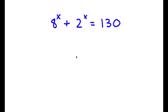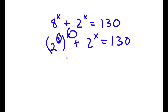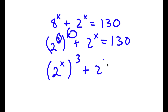In this problem, I have 8 to the power of x plus 2 to the power of x is equal to 130. To solve this, I'm going to first rewrite 8 as 2 to the power of 3. So now I have 2 to the power of 3 to the power of x plus 2 to the power of x equals 130. I can switch the places of 3 and x, so this is 2 to the power of x to the power of 3 plus 2 to the power of x equals 130.